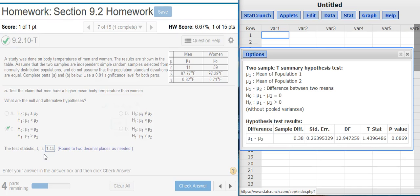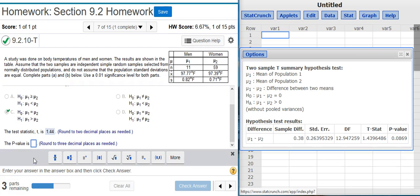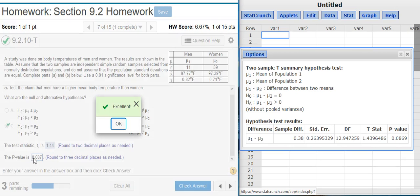Test statistic is always the second to last value in that table at the bottom of the results window. Nice work! Now we are asked for the p-value. The p-value is always the last value in that same table in the results window. Excellent!